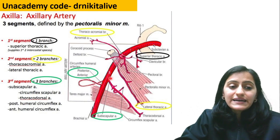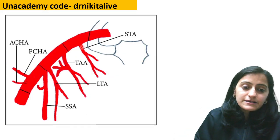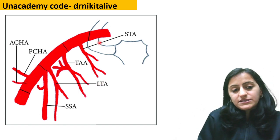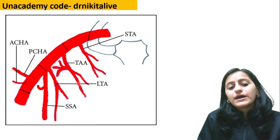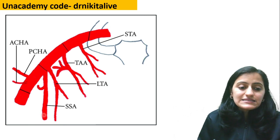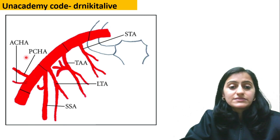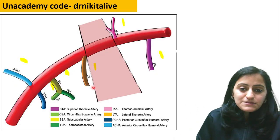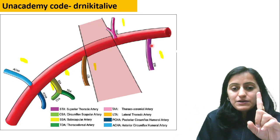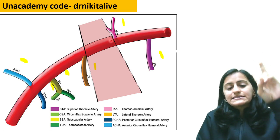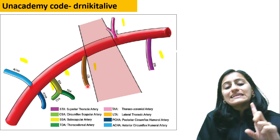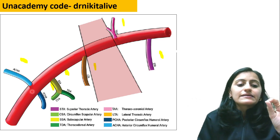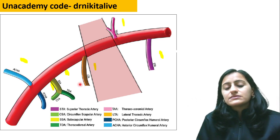To recap with the images: 'Screw the lion, save a person' — superior thoracic, thoracoacromial, lateral thoracic, subscapular, anterior and posterior circumflex humeral. First part: one branch — superior thoracic. Second part: thoracoacromial and lateral thoracic. Third part: subscapular and anterior and posterior circumflex humeral.